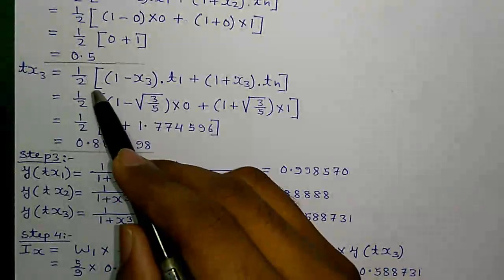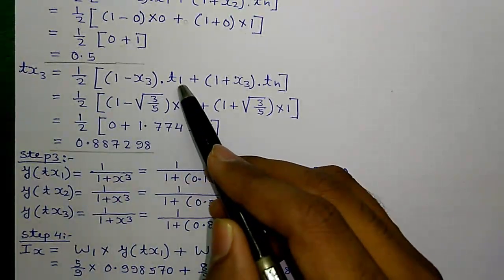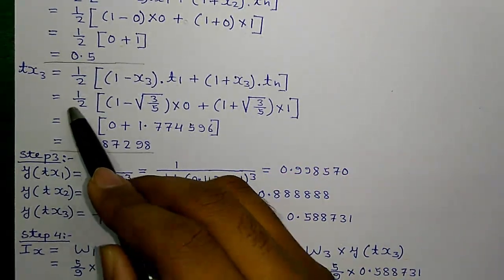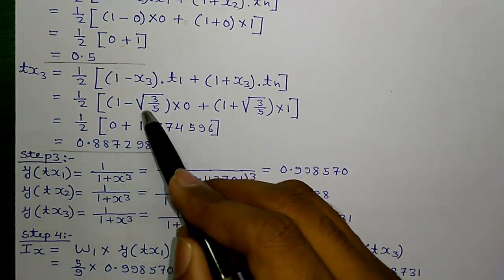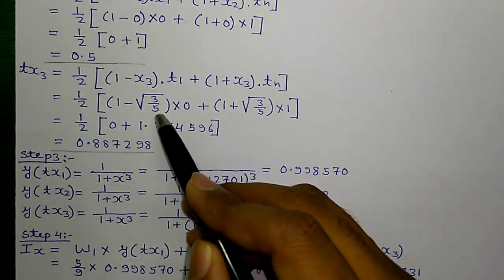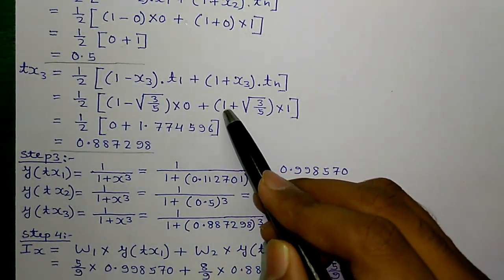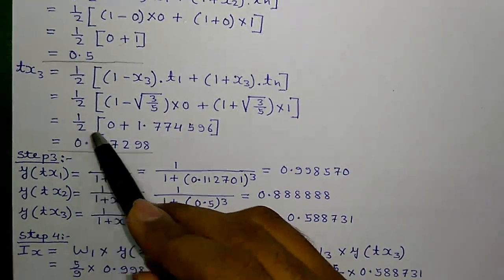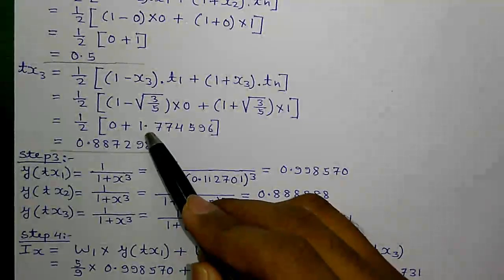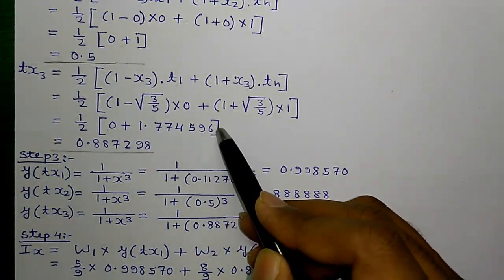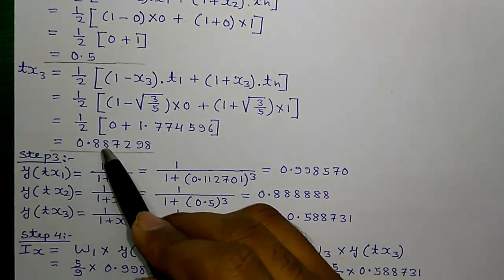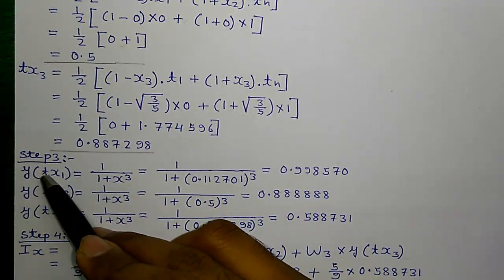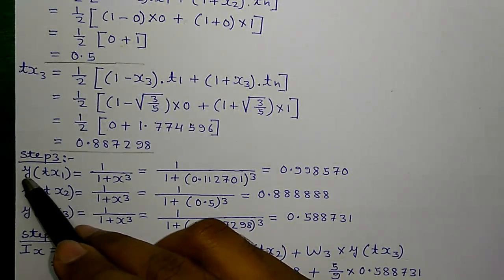tx3 equals to half into 1 minus x3 times t1 plus 1 plus x3 times tn equals to half into 1 minus root over 3 by 5 times 0 plus 1 plus root over 3 by 5 times 1 equals to half into 0 plus 1.774596 equals to 0.887298. Step 3, calculating y of tx1, tx2, tx3.